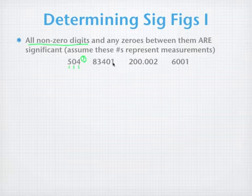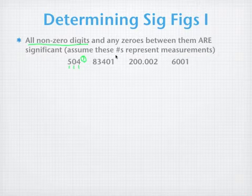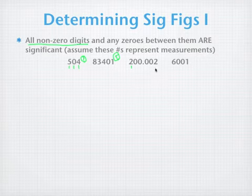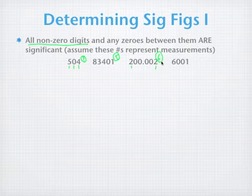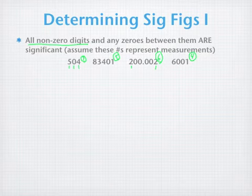All five digits in a number like 4.0010 are significant, including the zero between the 4 and the 1. Because there's a 2 on one end and a 2 on the other, those are non-zero and significant, so the four zeros in between are also significant — giving six sig figs. And for a four-digit number with all non-zero digits, all four are significant.